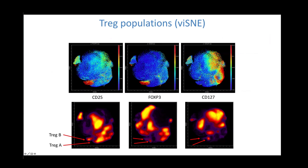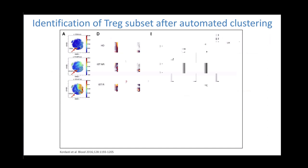This is an example of viSNE used to visualize T-regs. We can see the population of CD25-positive, FOXP3-positive, and CD127-low cells. Looking at the density plot, these T-regs form true populations — we call them Treg A and Treg B. In a healthy donor, the majority of T-regs are Treg B. In patients, you can have a different ratio of Treg A and B, which correlates with the likelihood of response to immunosuppression or with disease progression in malignancies.